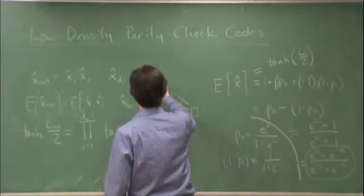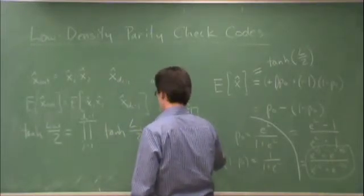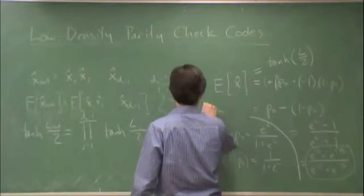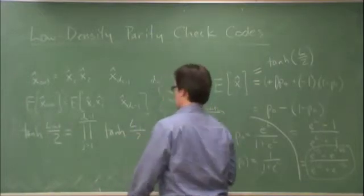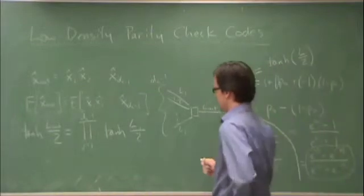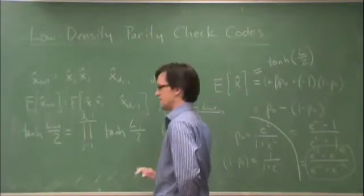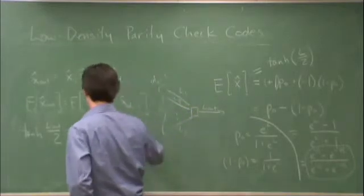So we have dc minus 1 of these: L1, L2, up to Lj. And then we have L out. So we know that tanh of L out over 2 is equal to the product from j equals 1 to dc minus 1 of tanh of Lj over 2. So what we need to do now is solve for L out.